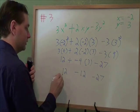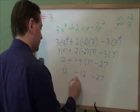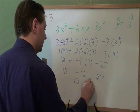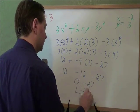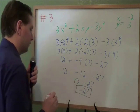And now we do all the addition and subtraction. 12 minus 12 is 0, and 0 minus 27 is negative 27. And that is how you evaluate an expression.